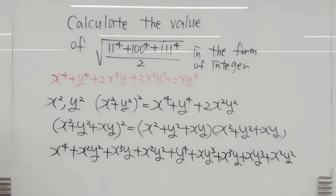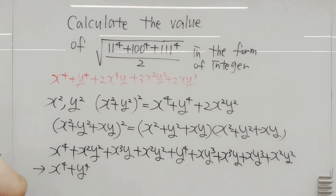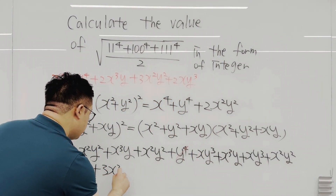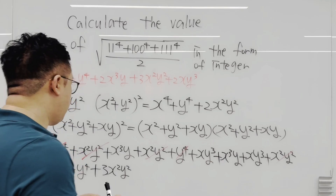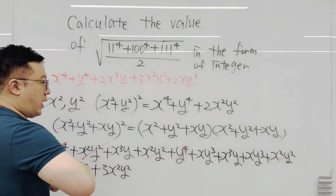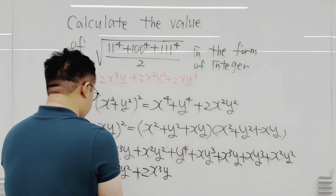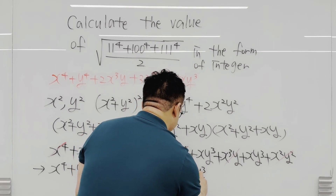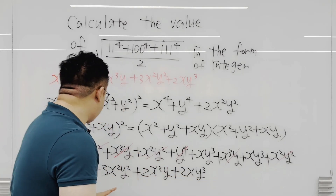Now we combine like terms: x⁴ plus y⁴, then for x²y² we have 1, 2, and 3 — giving 3x²y². For x³y we have 2, giving 2x³y. And for xy³ we have 2, giving 2xy³. This is exactly the same expression we need to work on, so we can represent the answer using x and y.